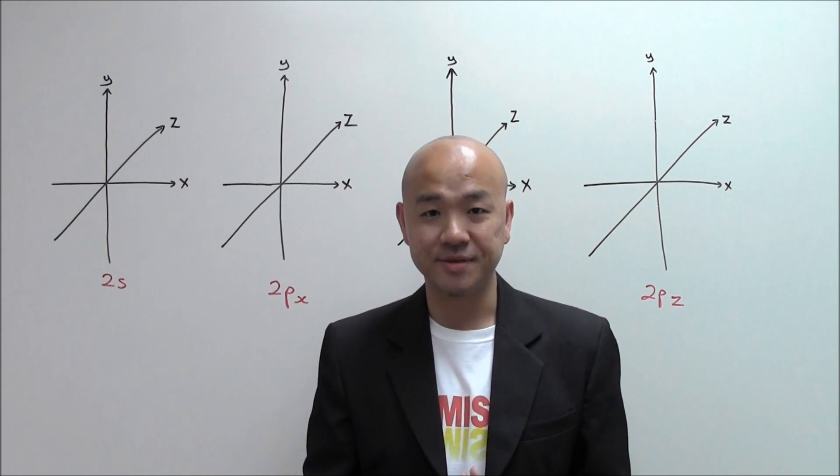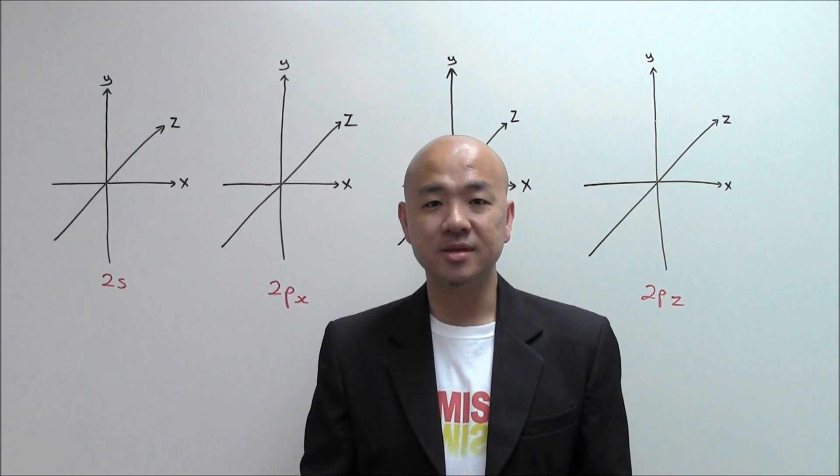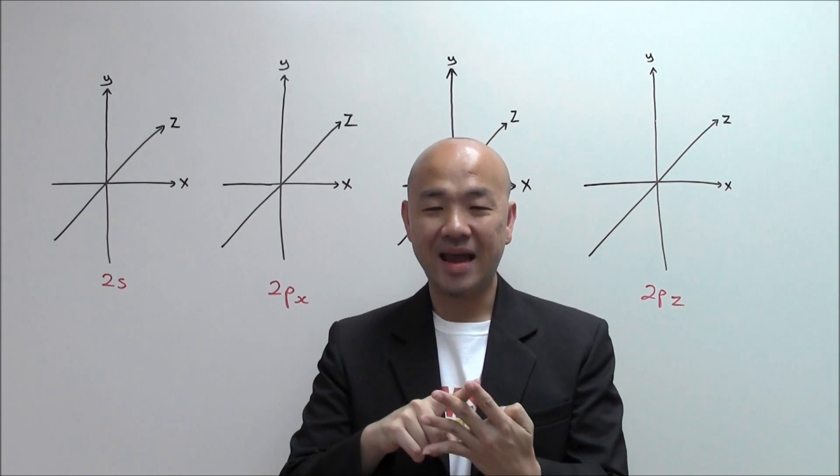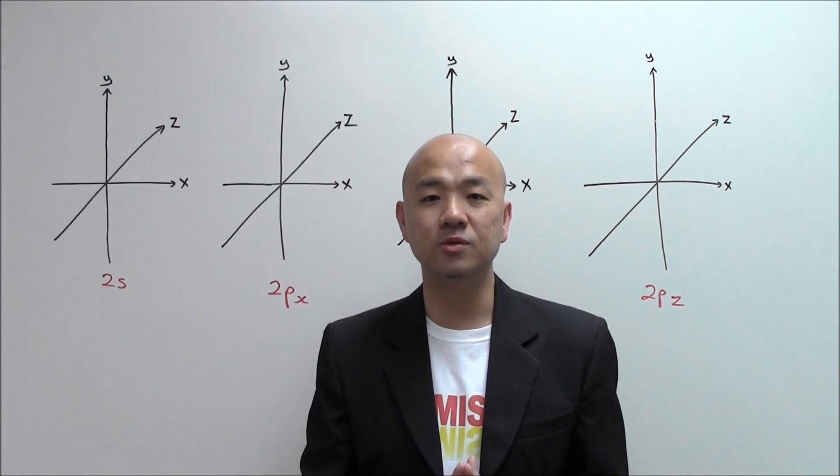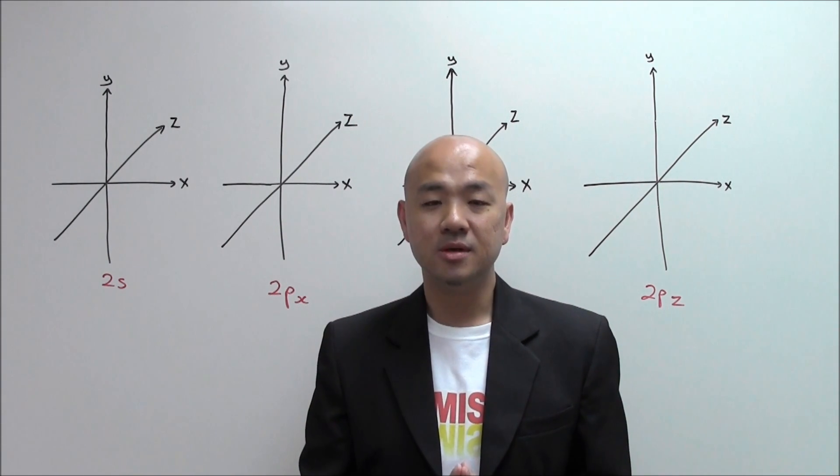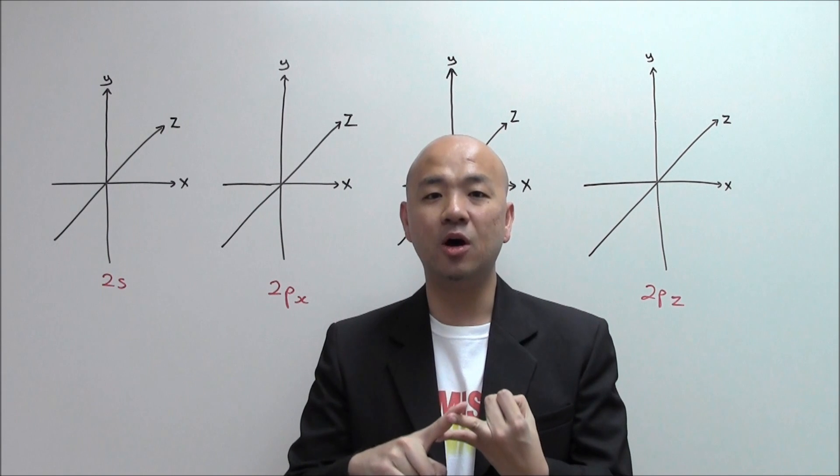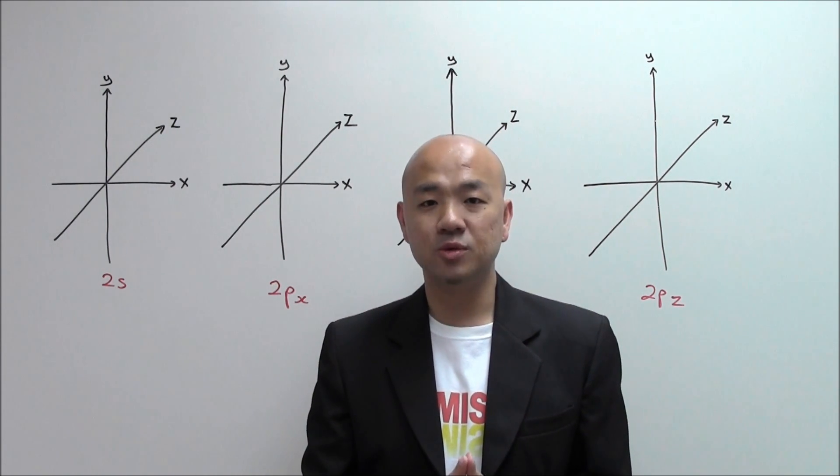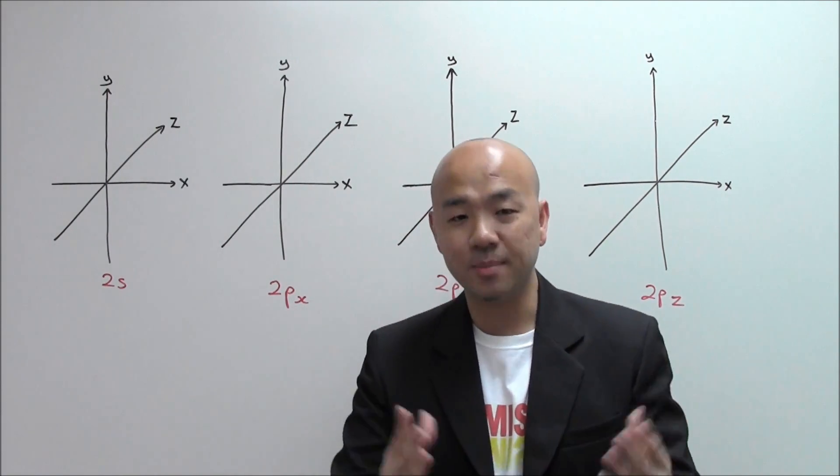In atomic orbitals there are four types that you learn: S, P, D and F. In the examination it's very common for you to be asked by the examiner to draw the S and P orbitals, and today I'm going to share with you the shape of these two types of orbitals. Let's take a look at the board.